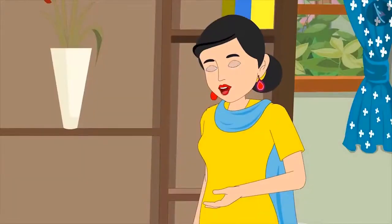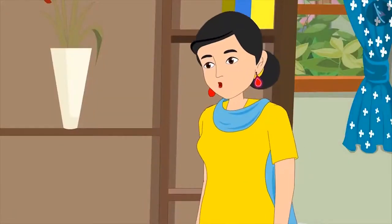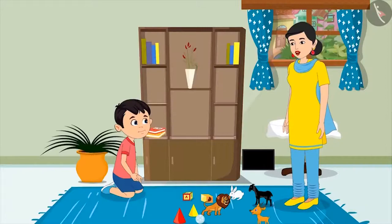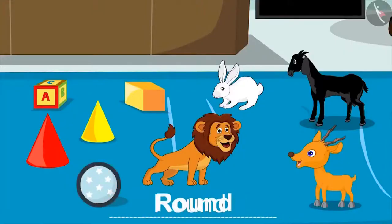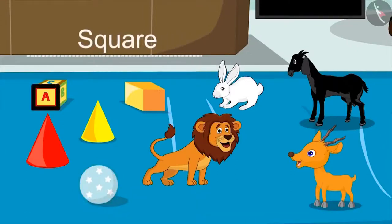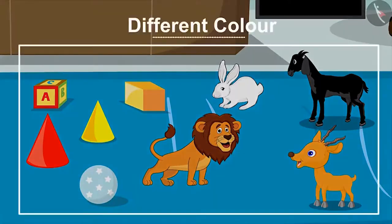Very good, Chotu. Let's look at these toys now. The shapes of all these toys are different. One is round like a ball, while another one is square like your book. And their color is also different.